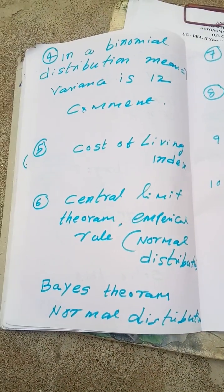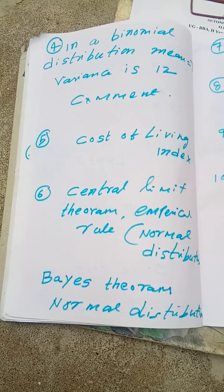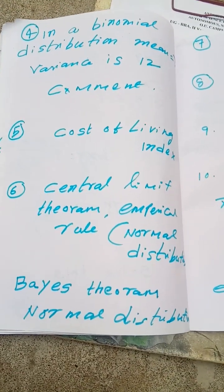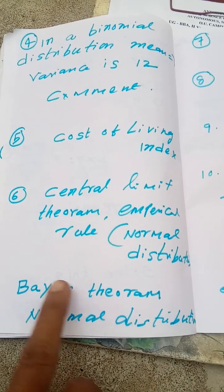Bayes theorem relates to joint and conditional probability, and Bayes theorem is a reasonable probability.